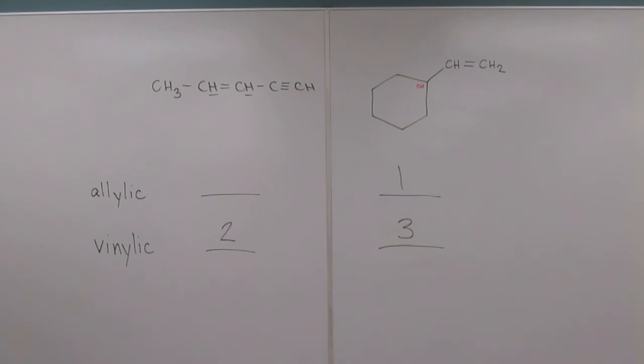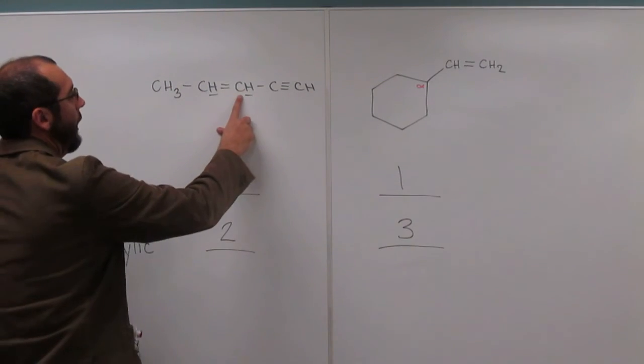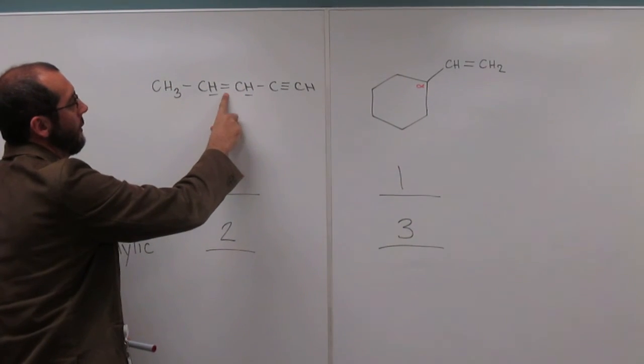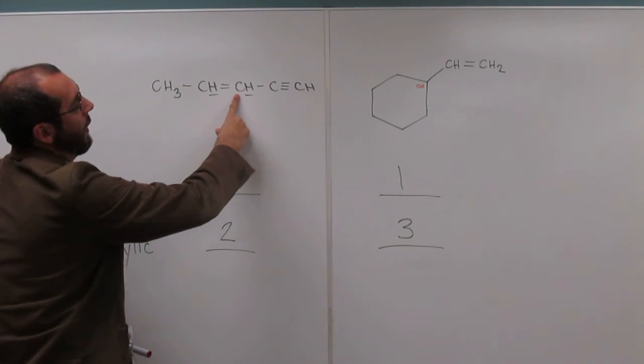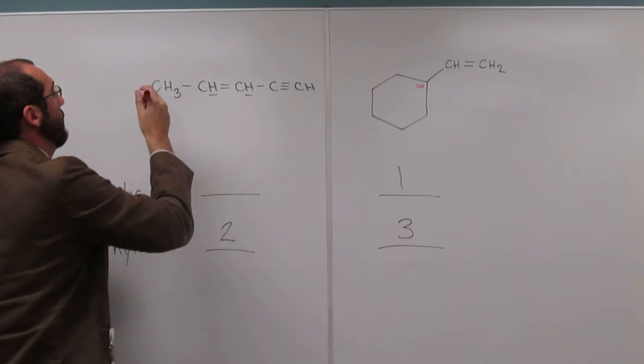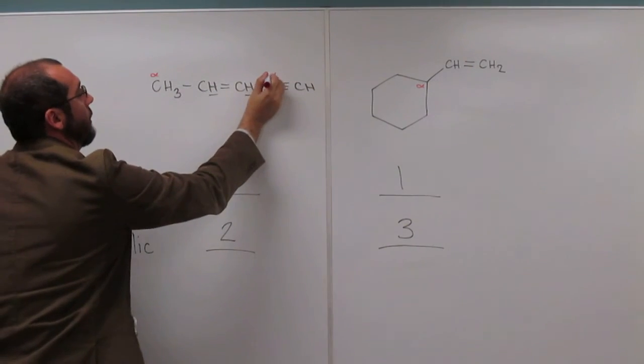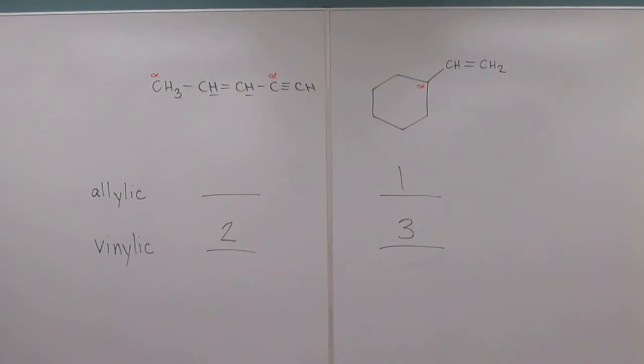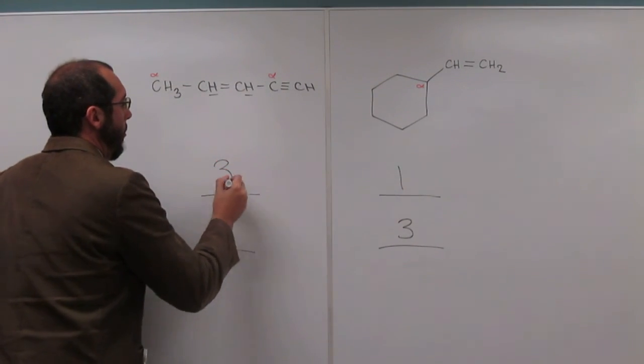So here, we see the double bond's here, right? So the alpha carbons are here and here. Let's draw those identifiers on there. And all we have to do now is count up the hydrogens that are directly attached to those carbons and, of course, everybody can see that there's three, right?